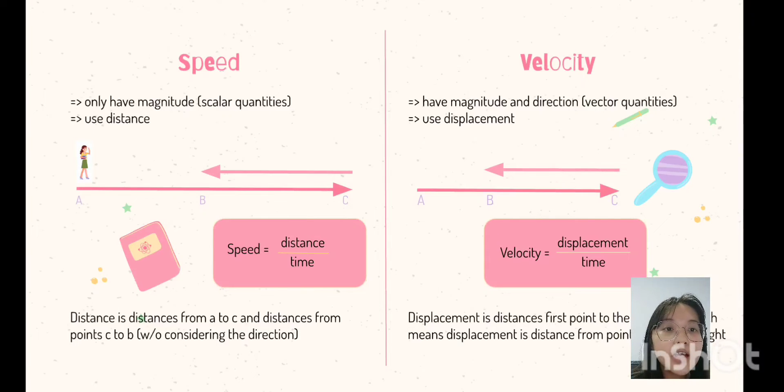I already made the illustration to explain more about speed and velocity. So, this woman is walking from point A to point C, then she turns back from going to the right direction to the left direction until point B. Distance is distances from point A to C and distances from point C to B without considering the direction, while velocity is different. Displacement is distance from first point to the last point, which means displacement is distance from point A to B and the direction is to the right.